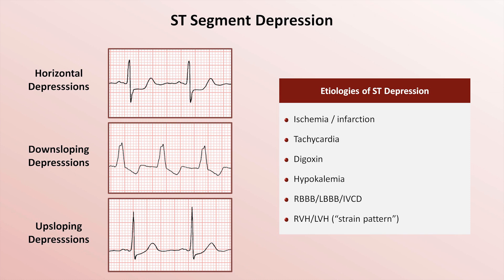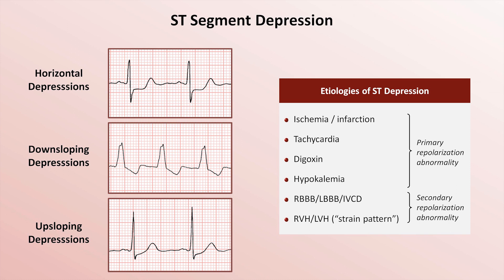Etiologies of ST depressions can be categorized into primary and secondary repolarization abnormalities. In secondary repolarization abnormalities, the ST segments are depressed due to the fact that the sequence of ventricular depolarization is abnormal — in other words, any time the QRS complex is severely abnormal, both the subsequent ST segment and the T-wave in that same lead will likely be abnormal too. In primary repolarization abnormalities, the primary defect is in the process of repolarization itself, and the preceding QRS complex may or may not be totally normal.